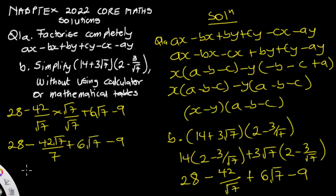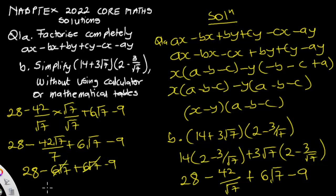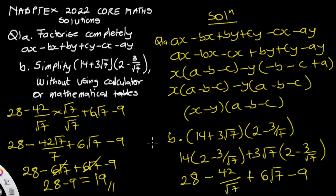So we have 28 minus 6√7 plus 6√7 minus 9. The negative 6√7 and positive 6√7 cancel each other out, leaving 28 minus 9, which equals 19. That is the solution to NAPTEST Core Mathematics question number one. Please expect the rest of the solutions. Thank you for watching.